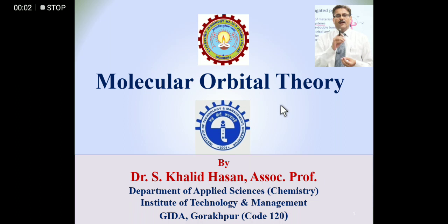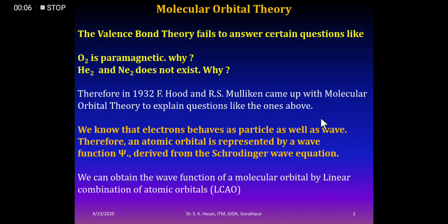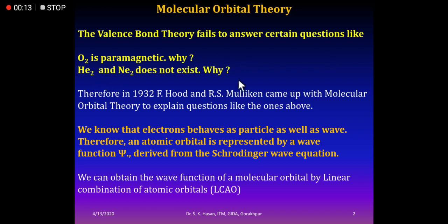Welcome to this lecture on molecular orbital theory. The valence bond theory fails to answer certain questions like: why is O2 paramagnetic? Why do He2 and Ne2 not exist?